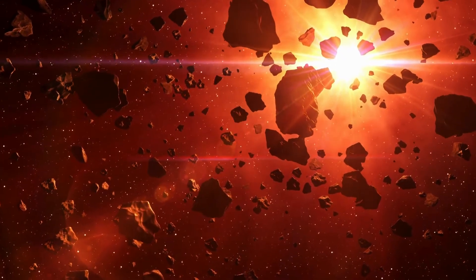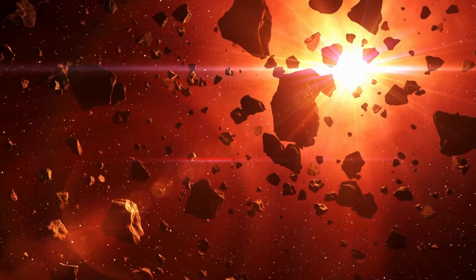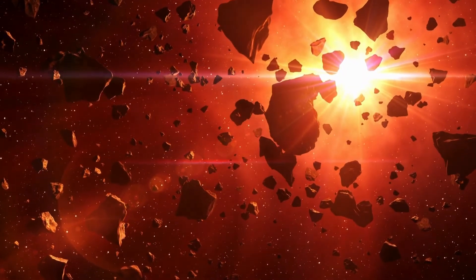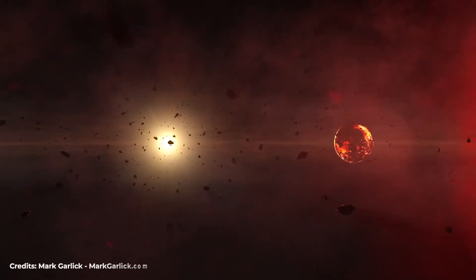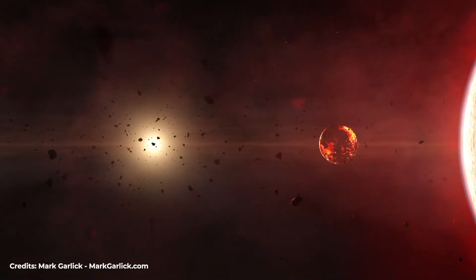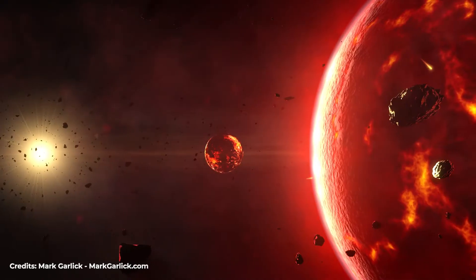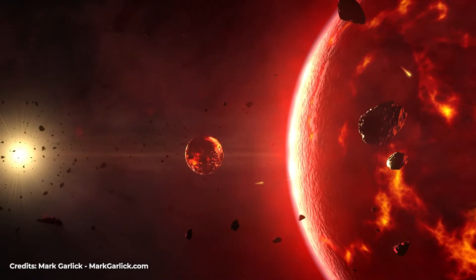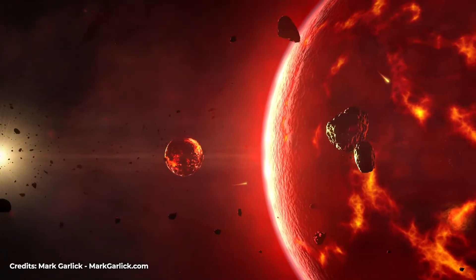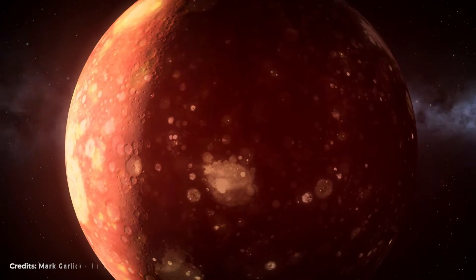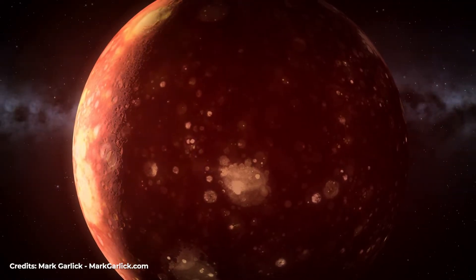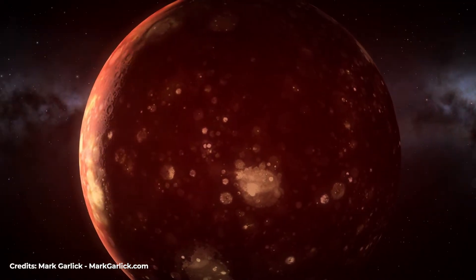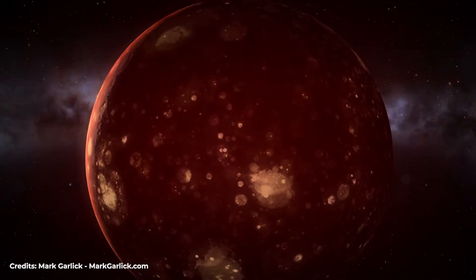The protoplanetary disk is a very active place where dust and small objects come together to form larger bodies. These bodies, known as planetesimals, can join together to form planets. Planetesimals gravitationally attract each other, leading them to collide and merge. As planetesimals merge, larger bodies known as protoplanets and later planets, such as Earth, are formed.